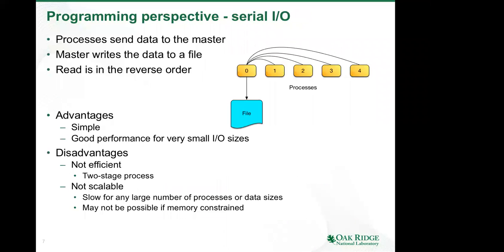Let's talk about three basic IO methods. Starting with serial IO — yes, you can do serial IO in an HPC environment, and sometimes it even makes sense. The idea is simple: all processes send their data to the master process, most commonly rank zero, which collects the data and writes it to a file in serial mode. The disadvantage is it's not terribly efficient — it's a two-stage process requiring communication before you can do the IO. It's also not very scalable; if the aggregate data size exceeds the memory of the master process, this approach might not even be feasible.